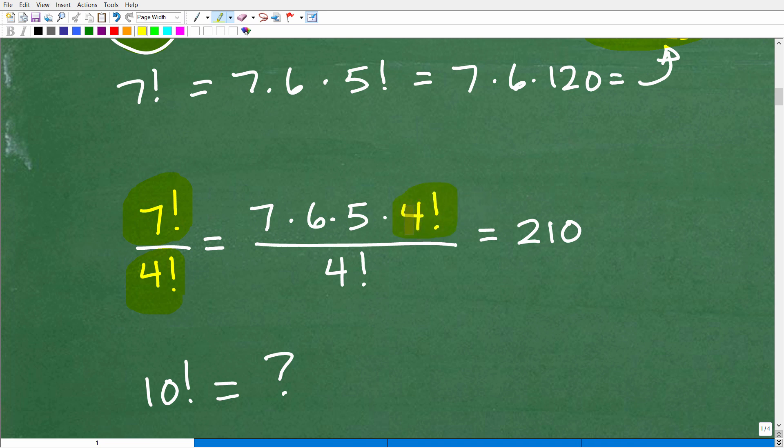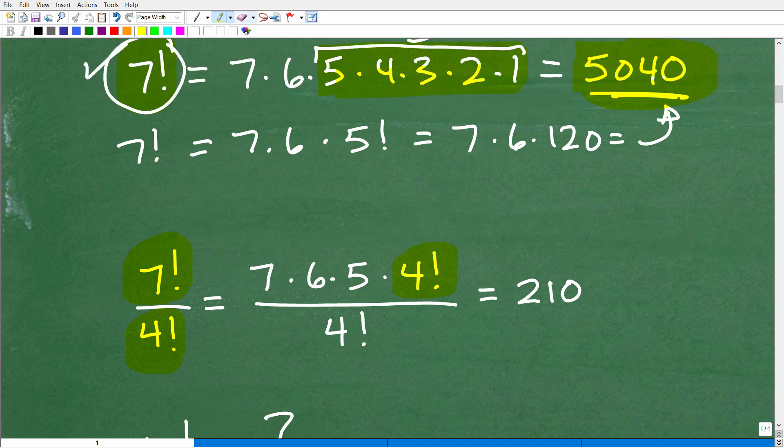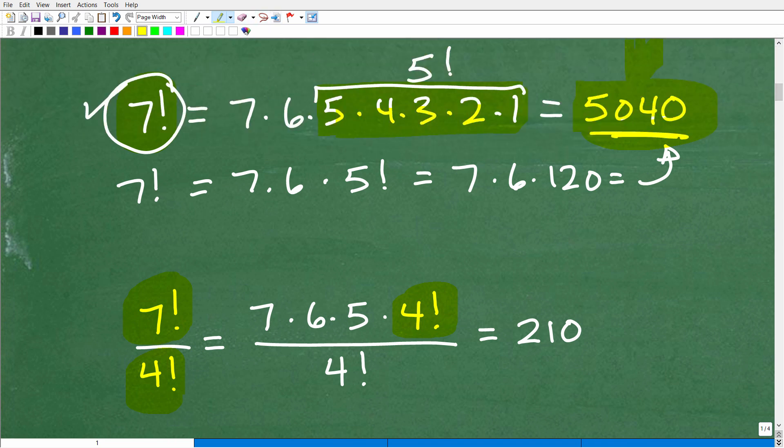What we can do is say, okay, 7 factorial, that's 7 times 6 times 5 times 4 times 3 times 2 times 1. So, really, at this point, once we're at 4, this is, let me kind of go up here just to make sure none of you are confused with this, 7 factorial, 7 times 6 times 5. Anytime along here, I can make this into a factorial. So this is 4 factorial. So 7 factorial is 7 times 6 times 5 times 4 factorial.